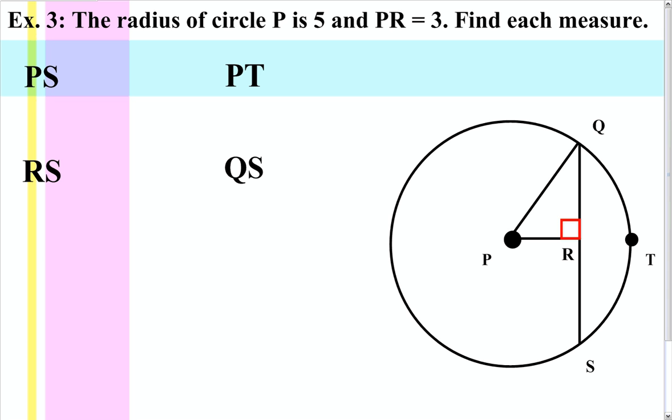Now in this picture, we are told the radius is 5. Segment PQ is a radius. We are also told that PR is 3.